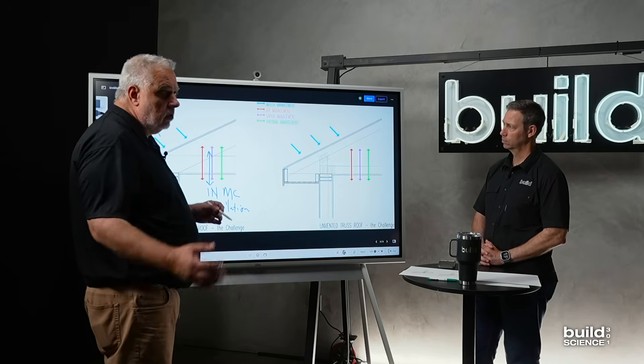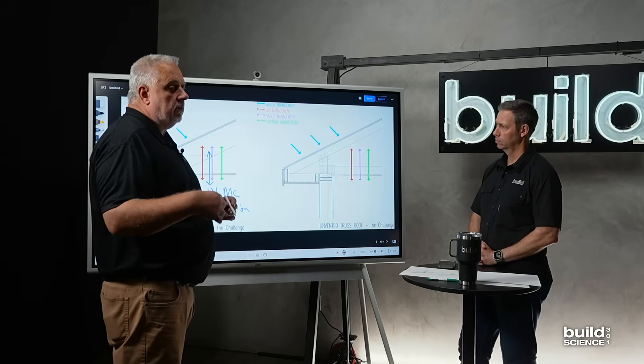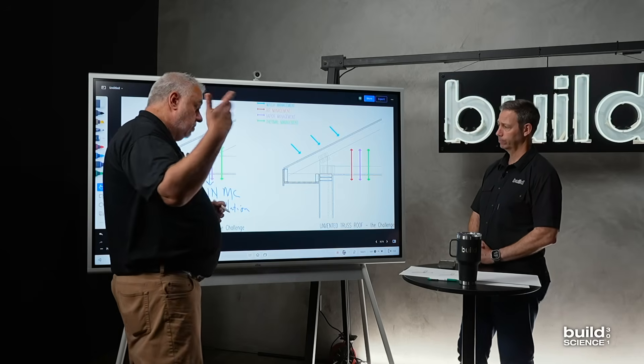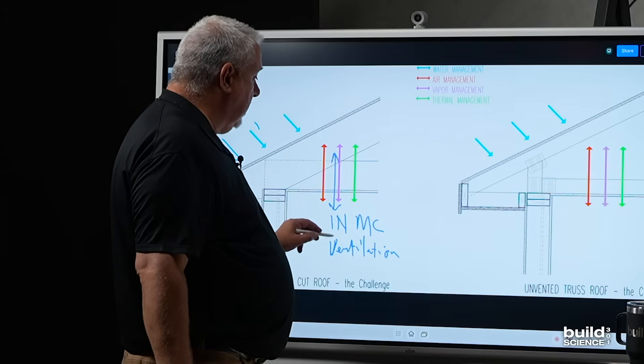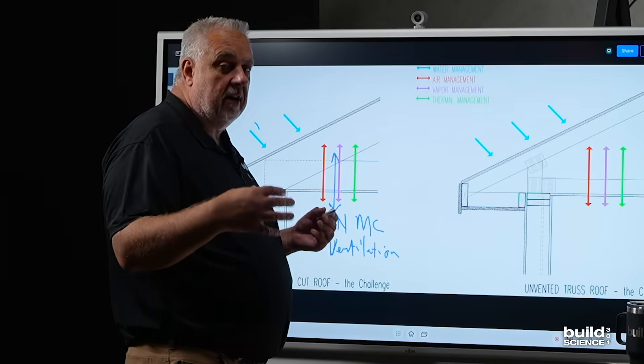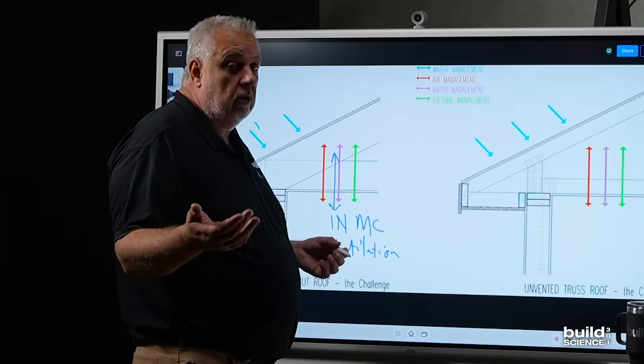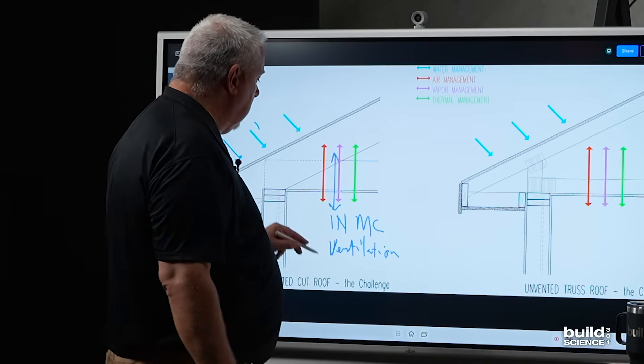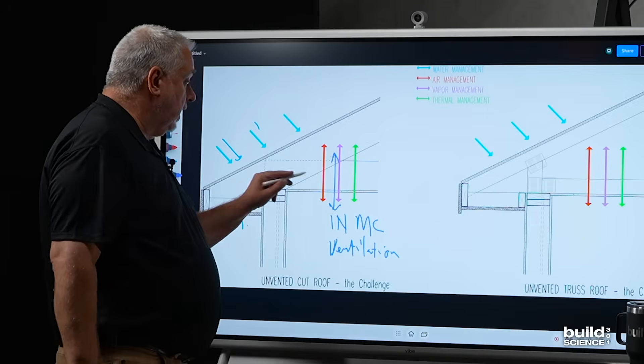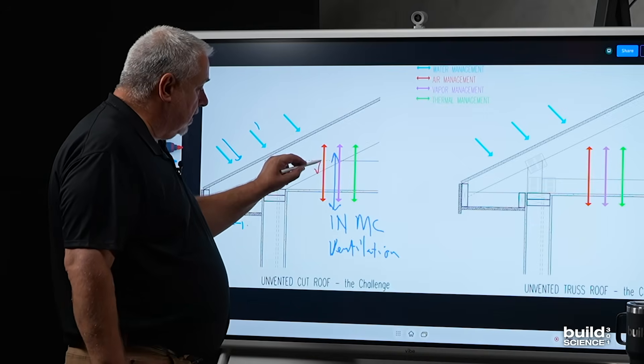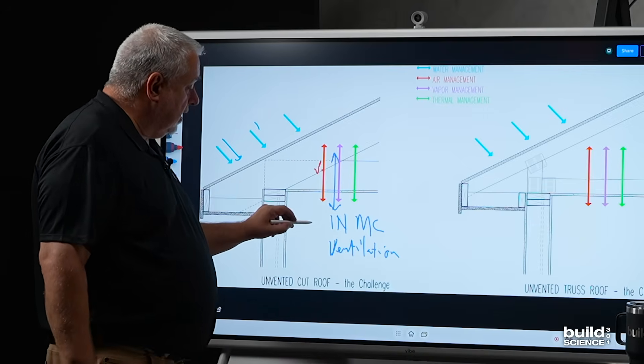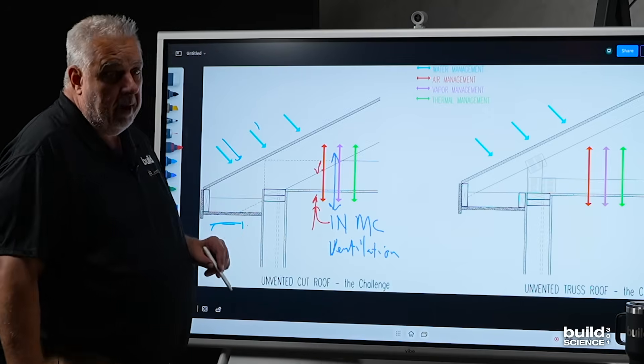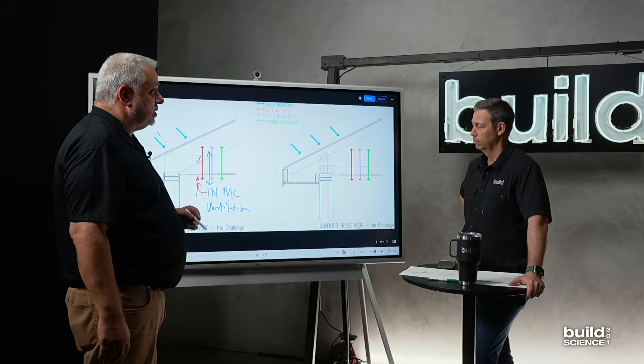We don't really talk much about mechanicals. We talked more about the details here. But understand, you move to an unvented roof, we have to take care of all that stuff inside. We're in a submarine. We didn't need ventilation before because we're venting the roof. Insulation, same thing, but it's a slightly different game. And in terms of air leakage, this one becomes very, very important because air can take moisture.